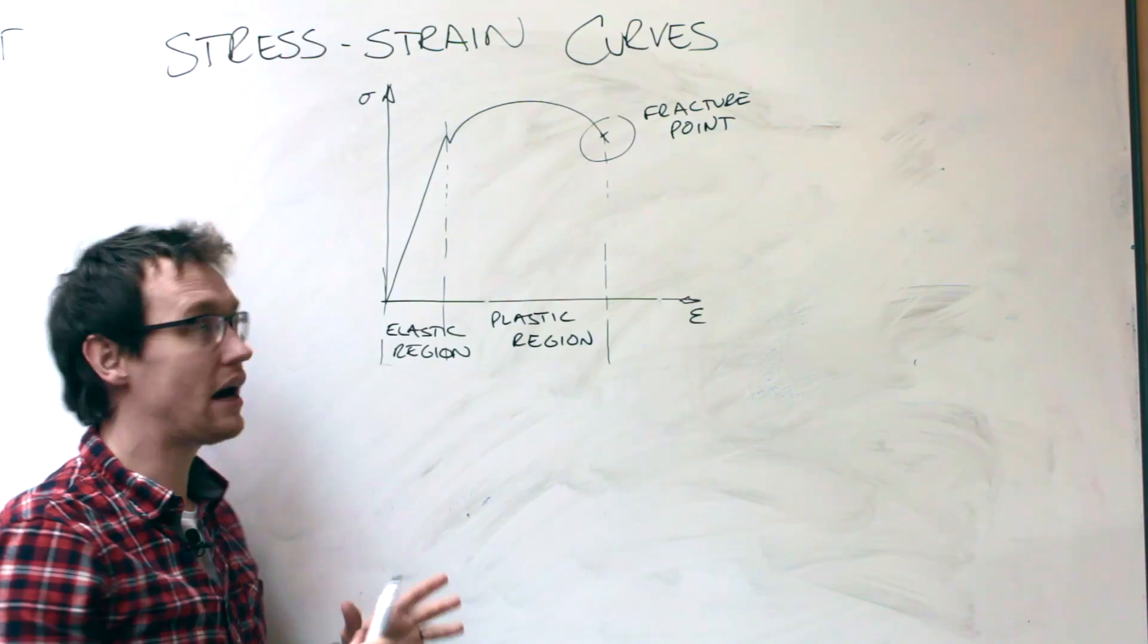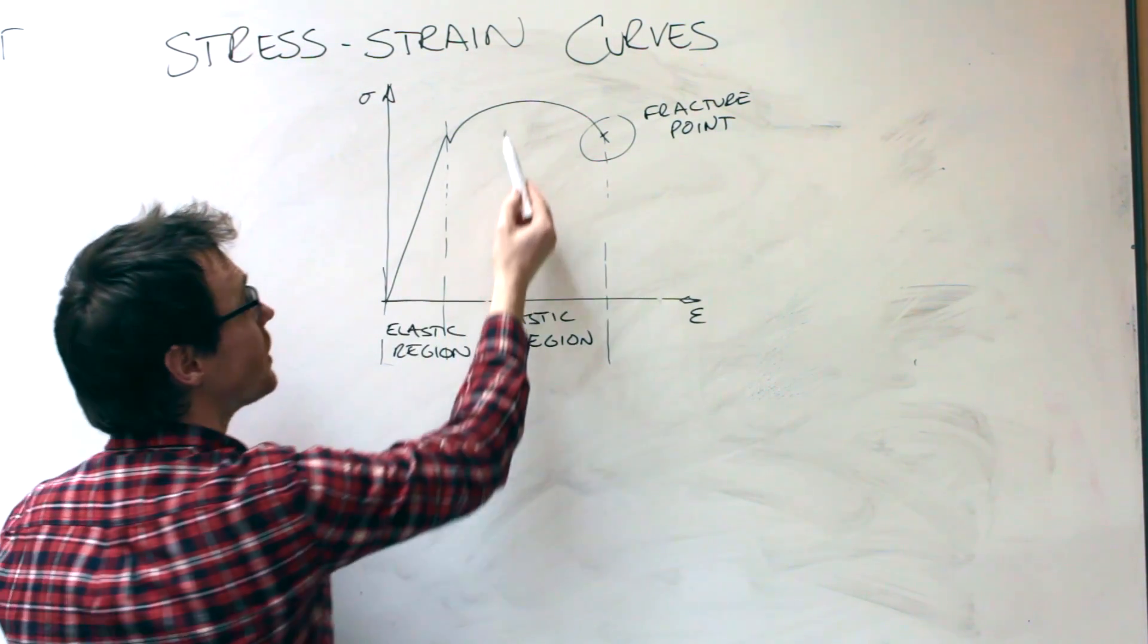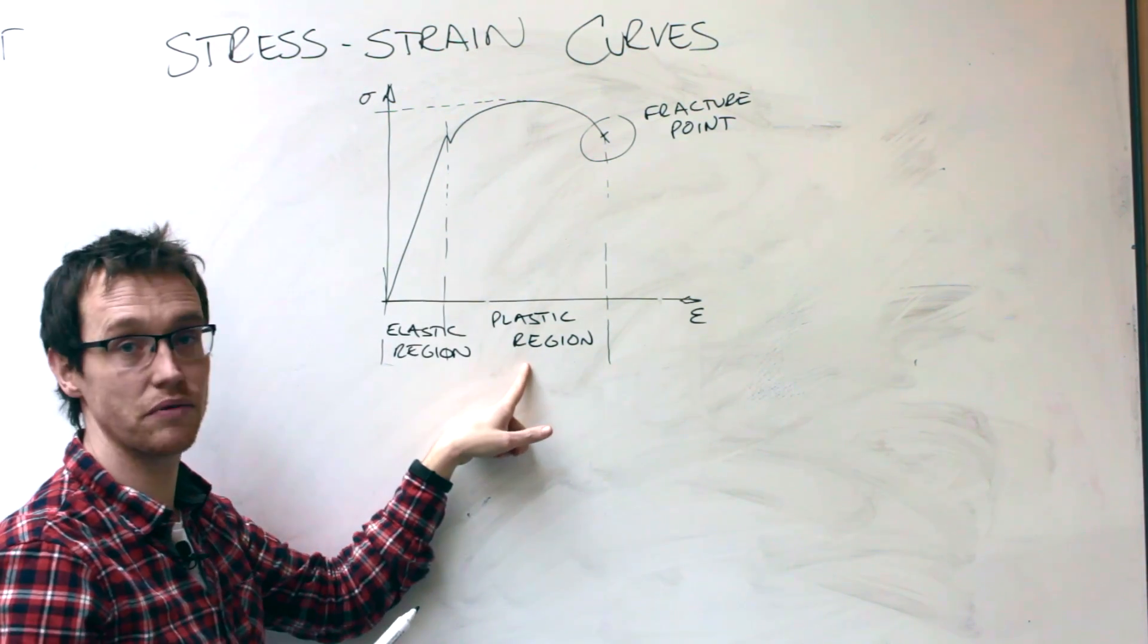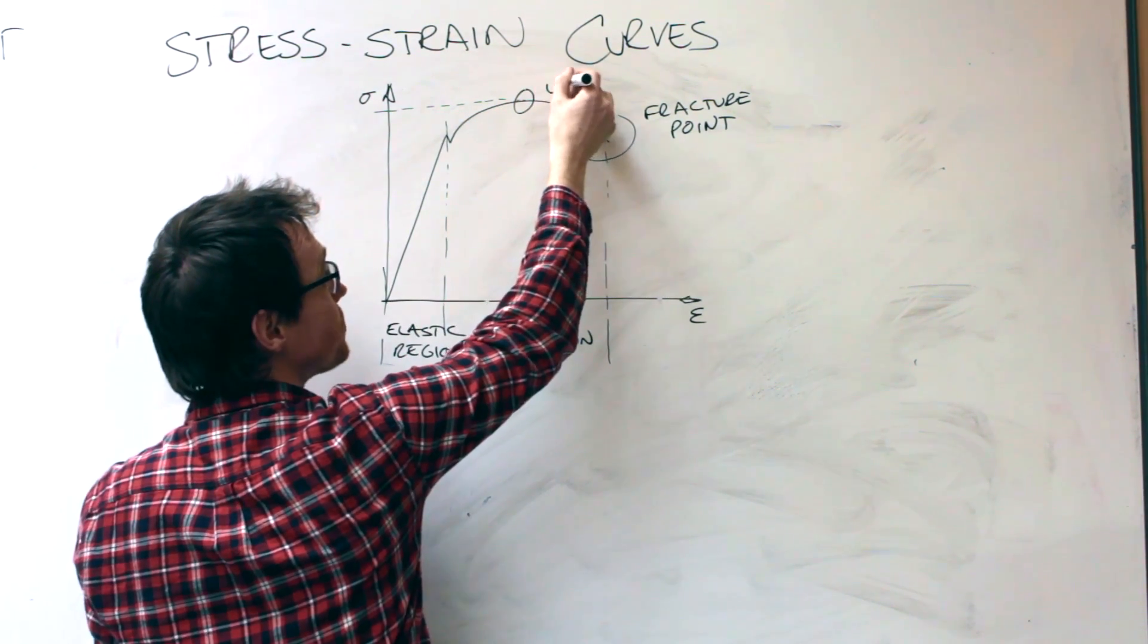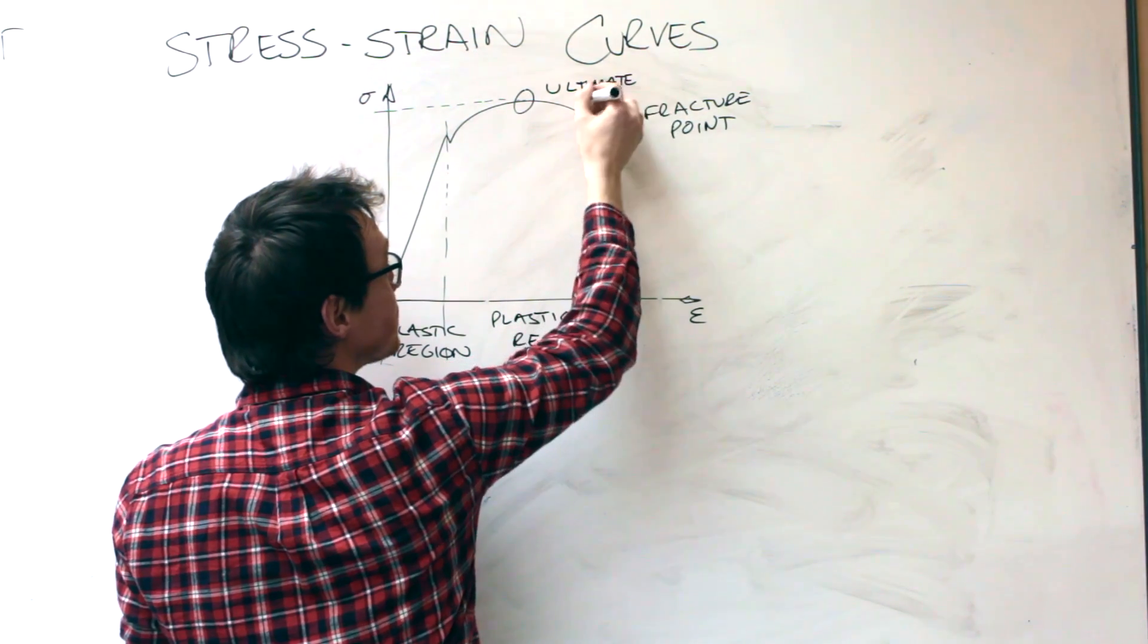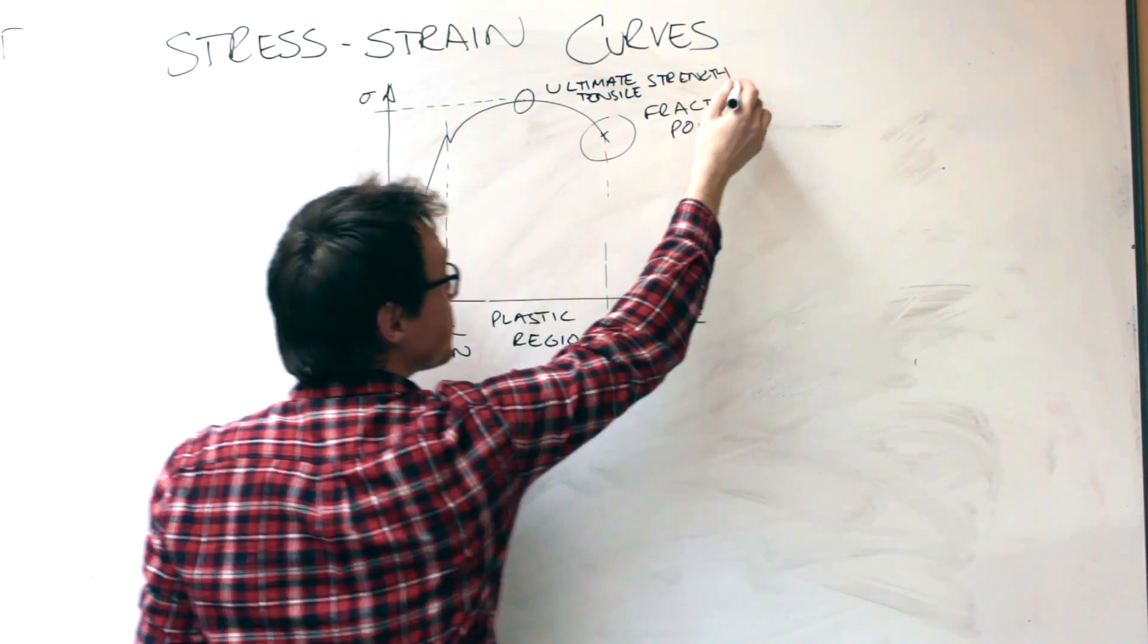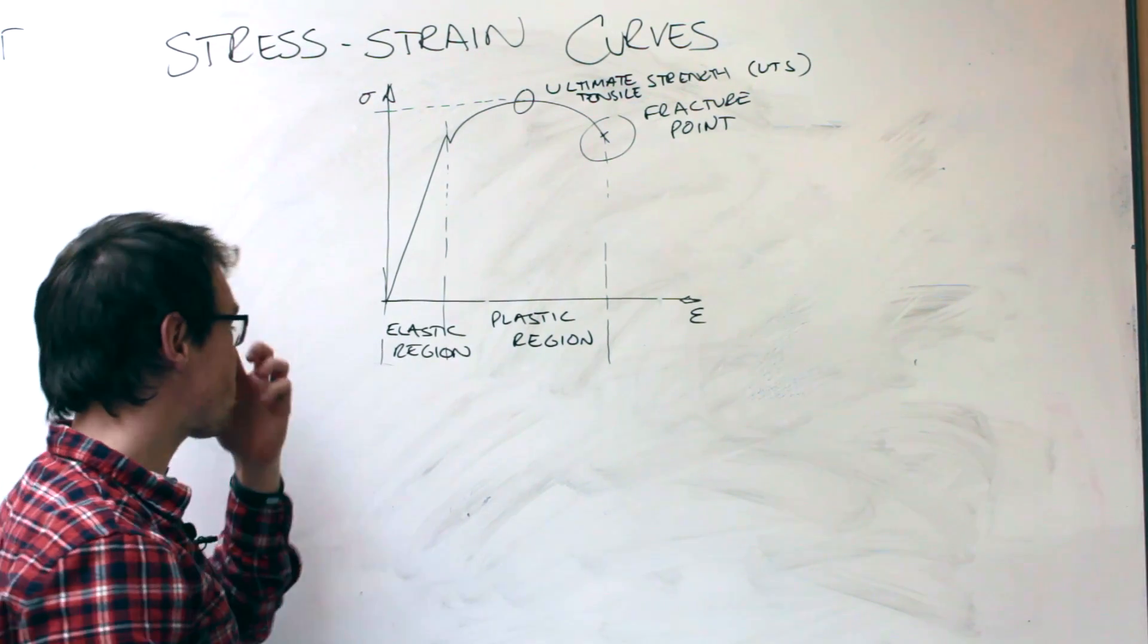And if we look carefully at the graph, we'll find that the maximum point on the graph in the stress region is up here. That is the highest point on the stress axis. And it's actually in the plastic region. And that's what's known as the UTS. So this point here is ultimate tensile strength.